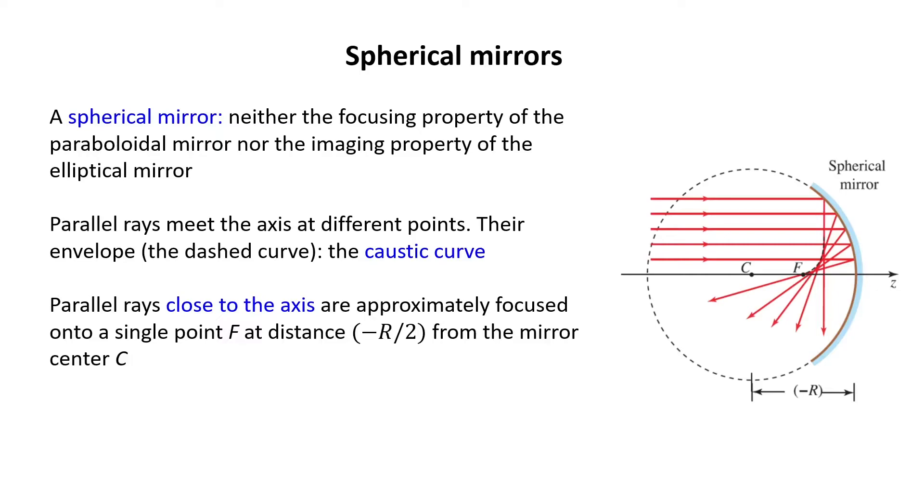R is called the radius of curvature of the mirror, and it is negative for concave mirrors and positive for convex mirrors. In this textbook, we explicitly show the negative sign as you see in the figure, so R itself is positive.